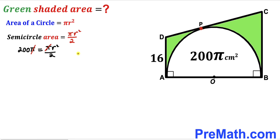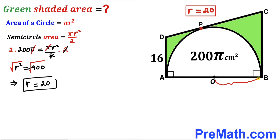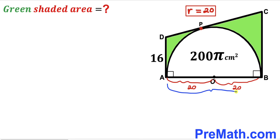Cancelling π from both sides and multiplying both sides by 2, we get r² = 400. Taking the square root of both sides, the radius r turns out to be 20 cm. Therefore the diameter of the semi-circle is 40 cm.